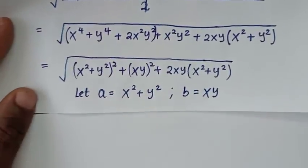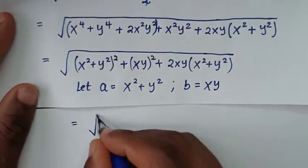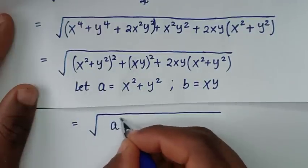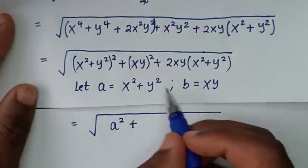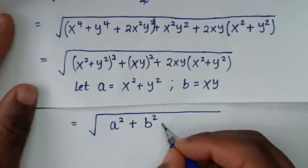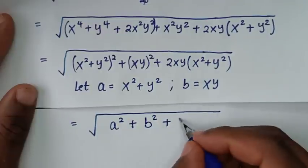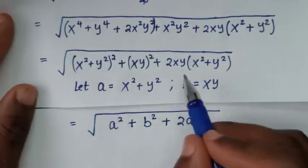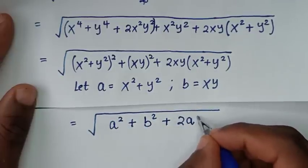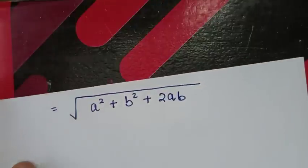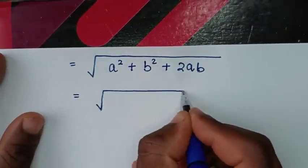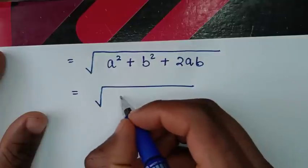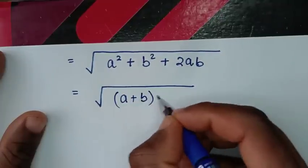Then our expression will be equal to the square root of A squared plus b squared plus 2Ab. This is the expansion of (A + b)², so the square root simplifies to just A + b.